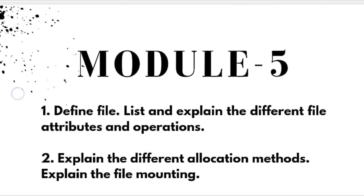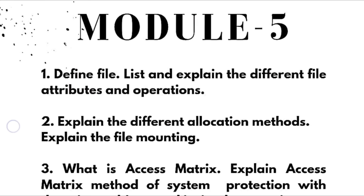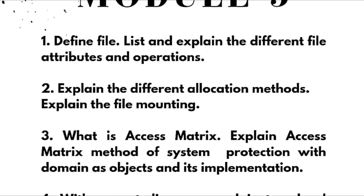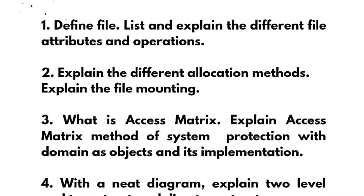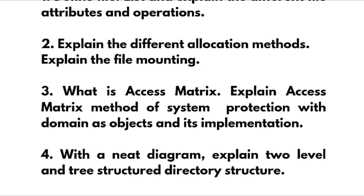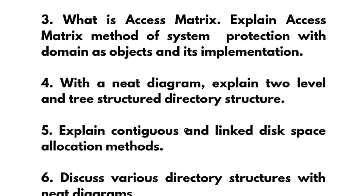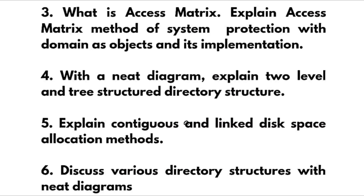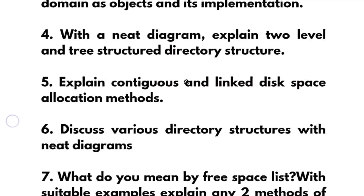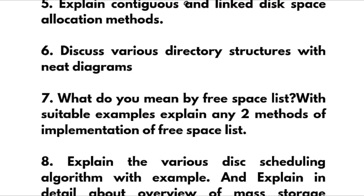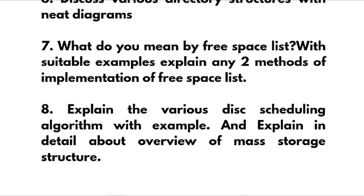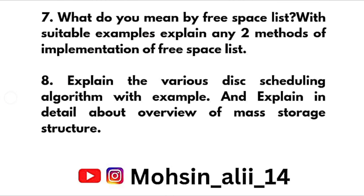Module 5 — last module: Define file. List and explain different file attributes and operations. Explain the different allocation methods. Explain file mounting. What is access matrix — explain access matrix method of system protection with domain as objects and its implementation. With a neat diagram, explain two-level and tree-structure directory structure. Explain contiguous and linked disk space allocation methods. Discuss various directory structures with neat diagrams. What is a free space list — explain any two methods of implementation of a free space list. Explain various disk scheduling algorithms with examples. Explain in detail the overview of mass storage structure.